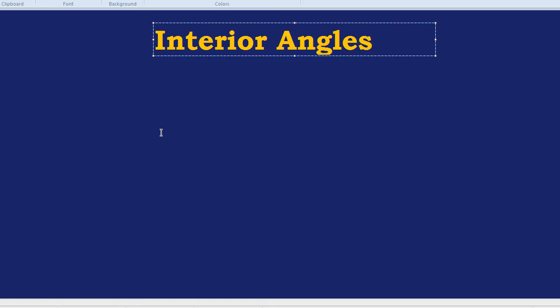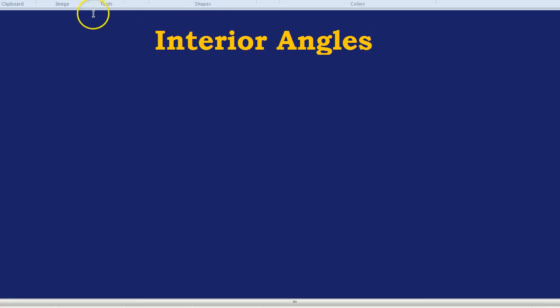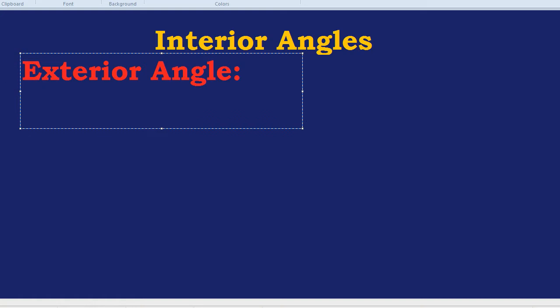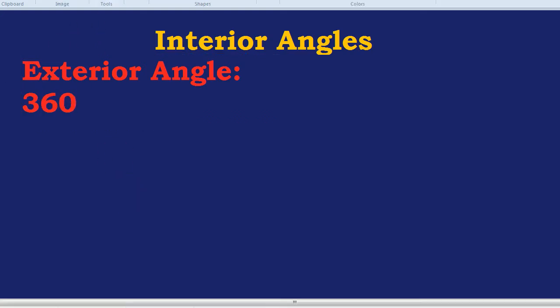We're going to use that knowledge to work out interior angles. If you haven't seen the other video, what we do to find the exterior angle of a shape is we do 360 degrees and then we divide that by the number of sides the shape has. So 360 degrees divided by the number of sides. Let's put that in a box so we can keep it safe when we're doing our calculations.